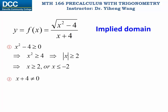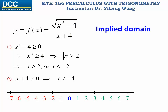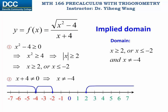The second requirement is that the denominator cannot be zero, so x cannot equal negative four. We can represent the domain on a number line: x must be greater than or equal to two (filled circle at positive two), or x could be less than or equal to negative two, but x cannot equal negative four, so that point is removed. When writing out the domain, keep in mind it must satisfy all requirements simultaneously. The domain can be written combining these intervals with negative four excluded.